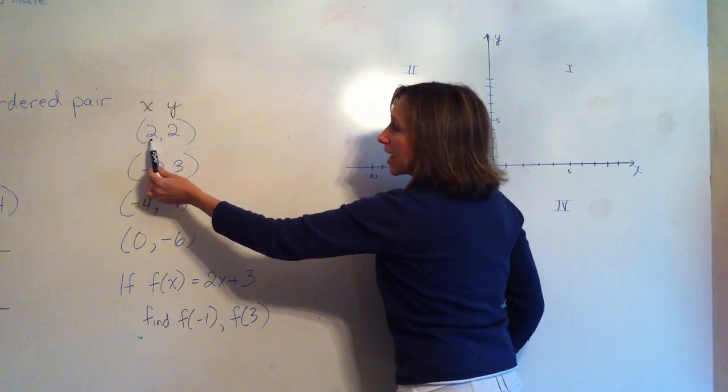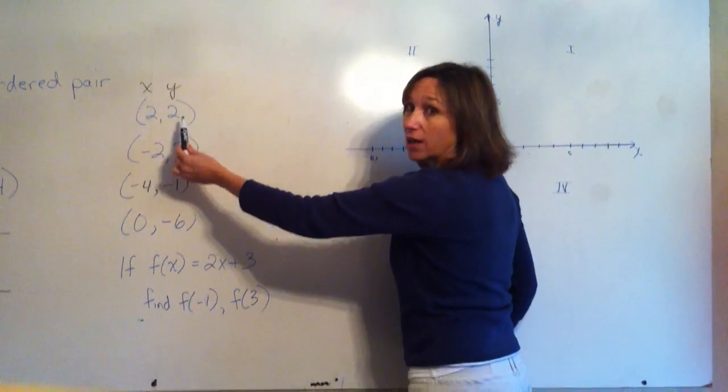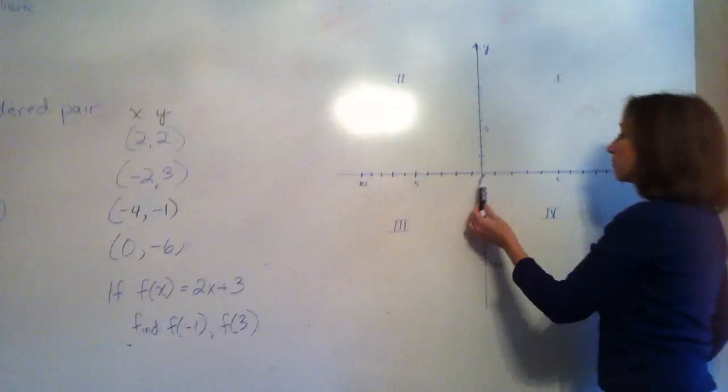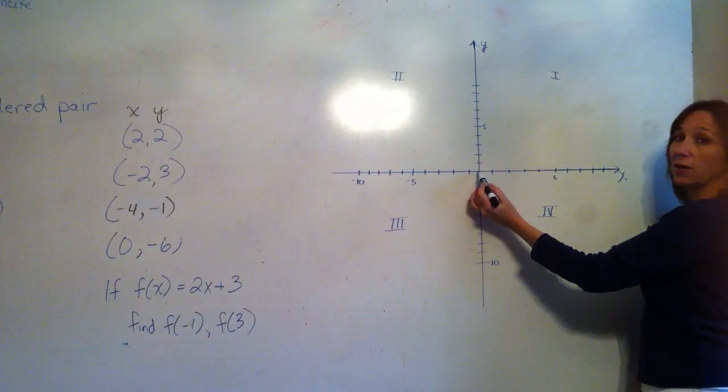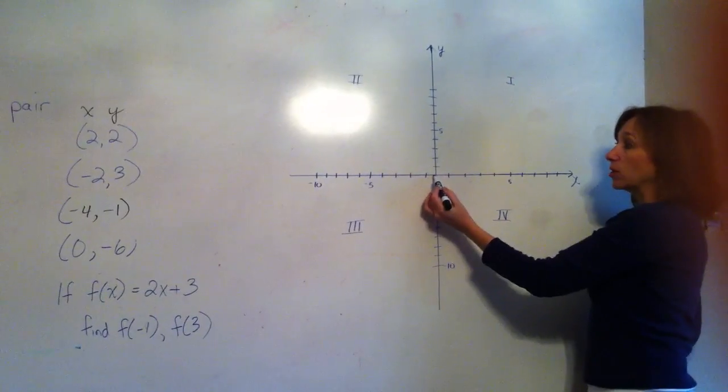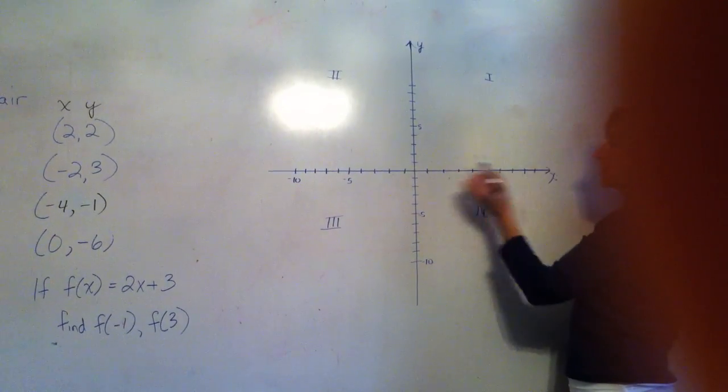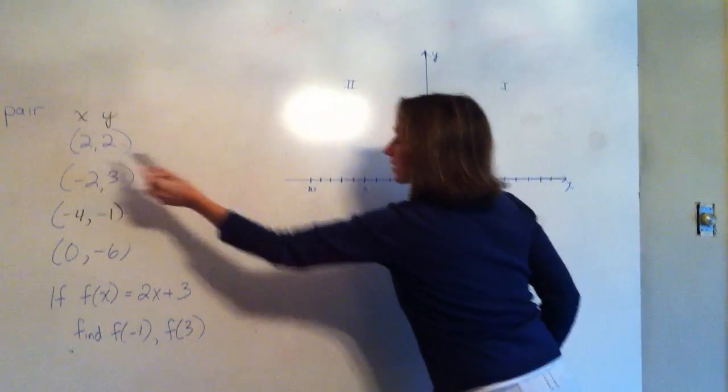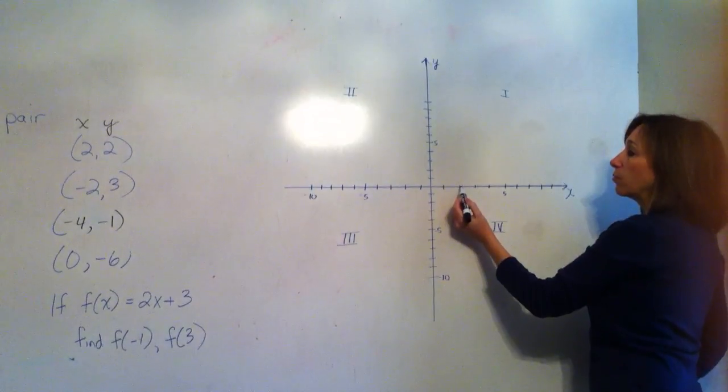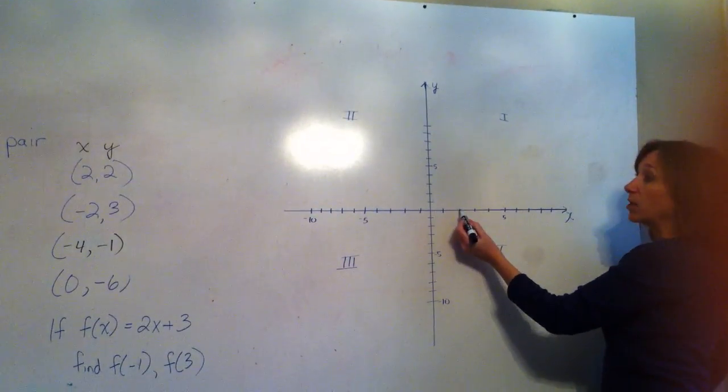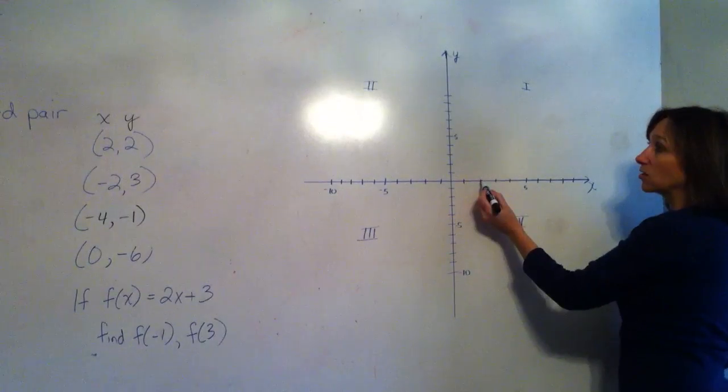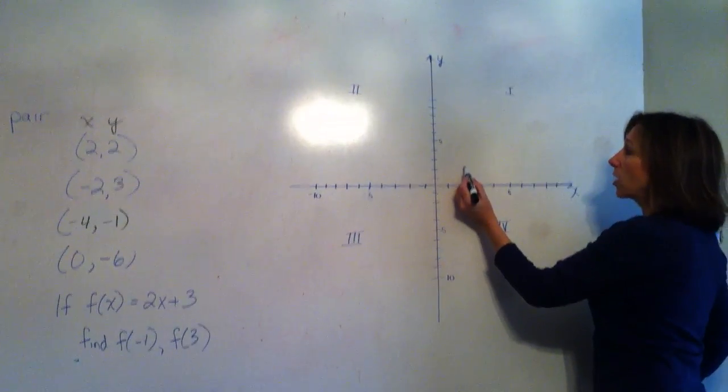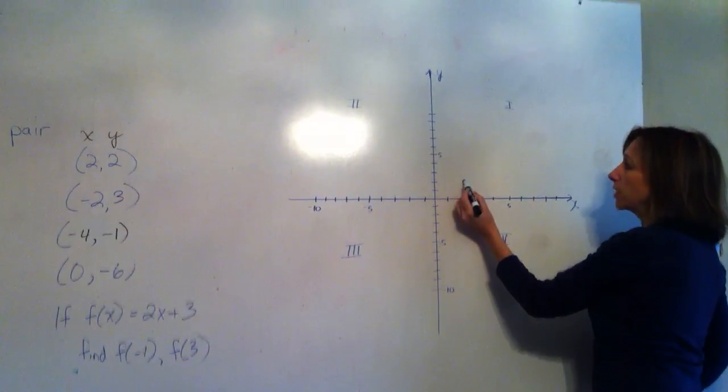The first number is the x-coordinate. The second one is the y-coordinate. So we start at 0. And we go to the x-coordinate, we move 2 on the x-axis: 1, 2. And then we stop there and we do what the y-coordinate says. It says 2. So we go up 2 on the y-axis and put a point.